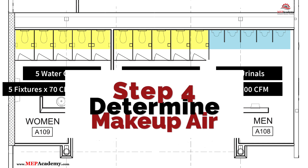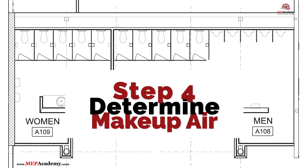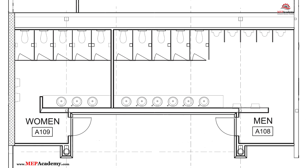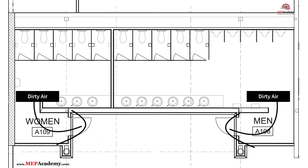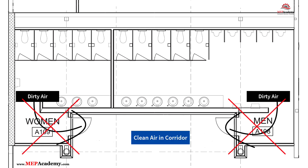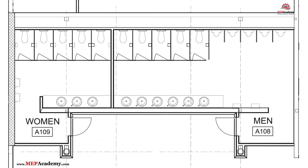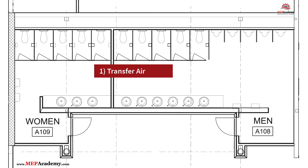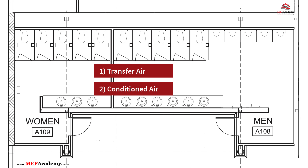Step 4: Determine the exhaust makeup air method. Providing makeup air for exhausted air is essential to maintaining proper pressure balance. ASHRAE recommends ensuring air doesn't flow from dirty areas into clean spaces and maintaining negative pressure. Common makeup air methods include: (1) transfer air — air from adjacent spaces flows in via door undercuts or grills; (2) dedicated conditioned air supplied directly through the HVAC system; and (3) a combination method — a mix of transfer and limited conditioned air.